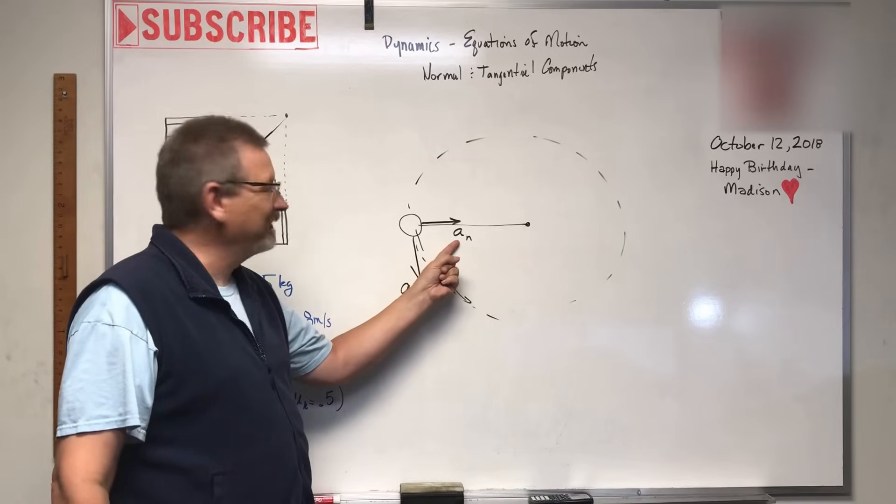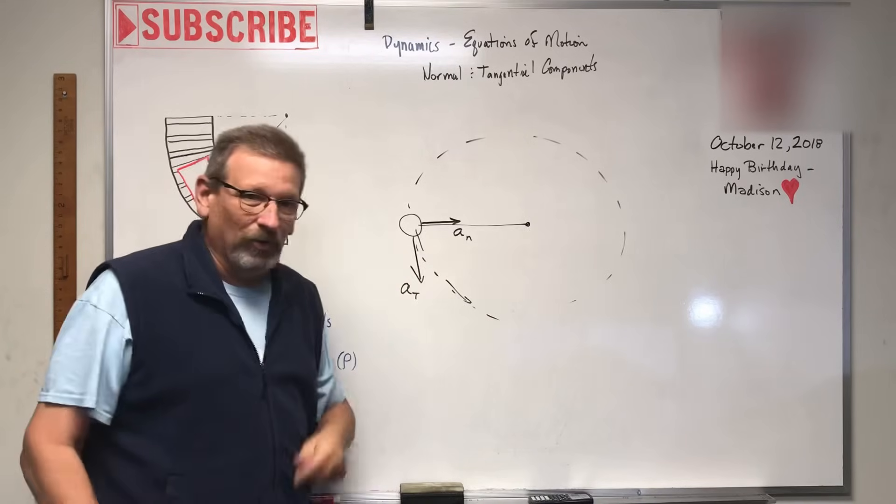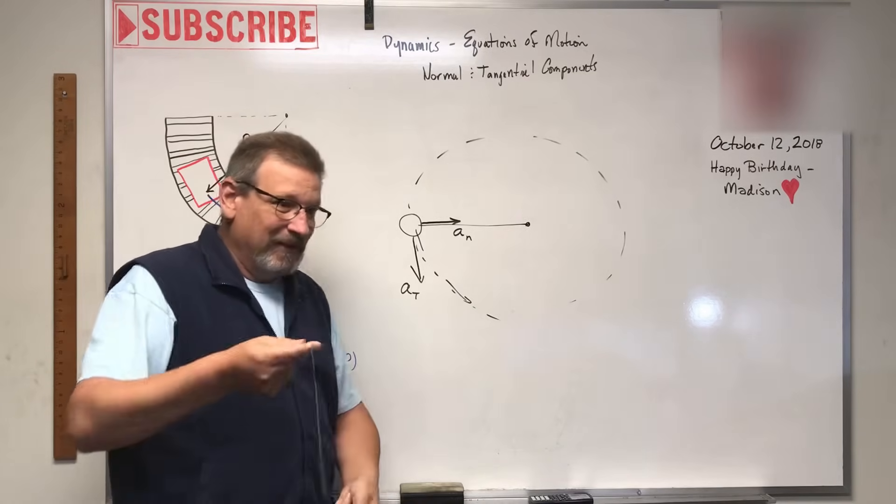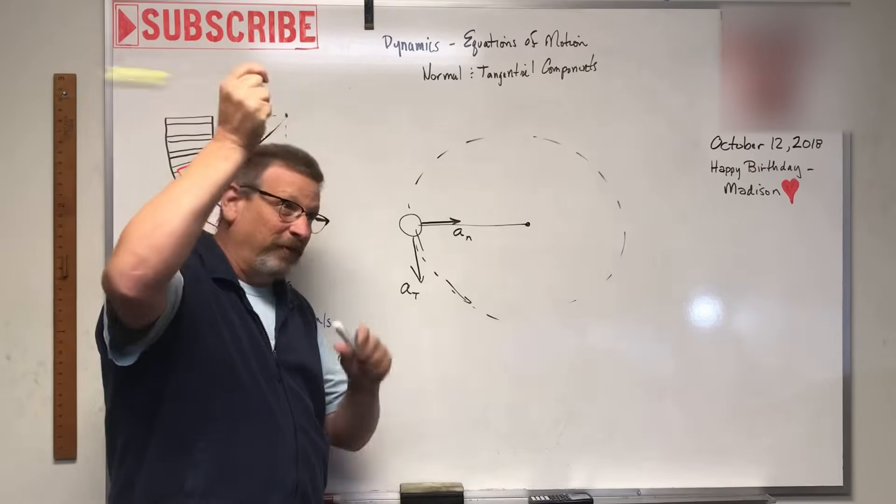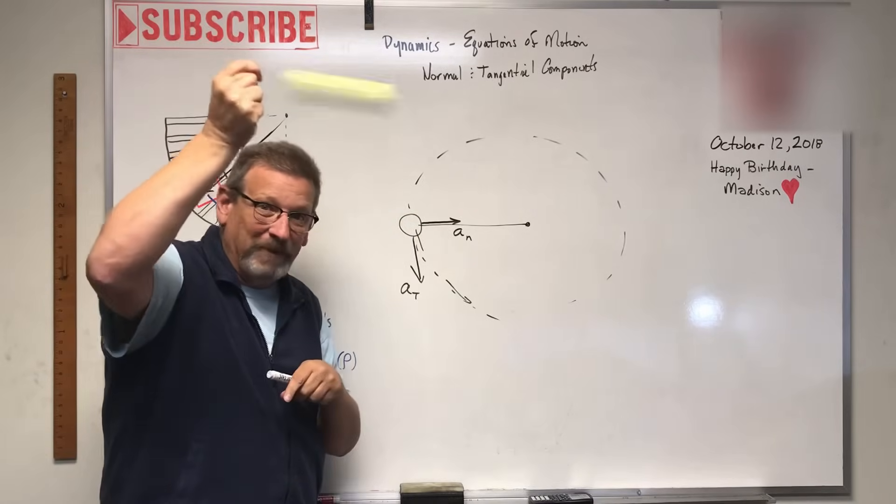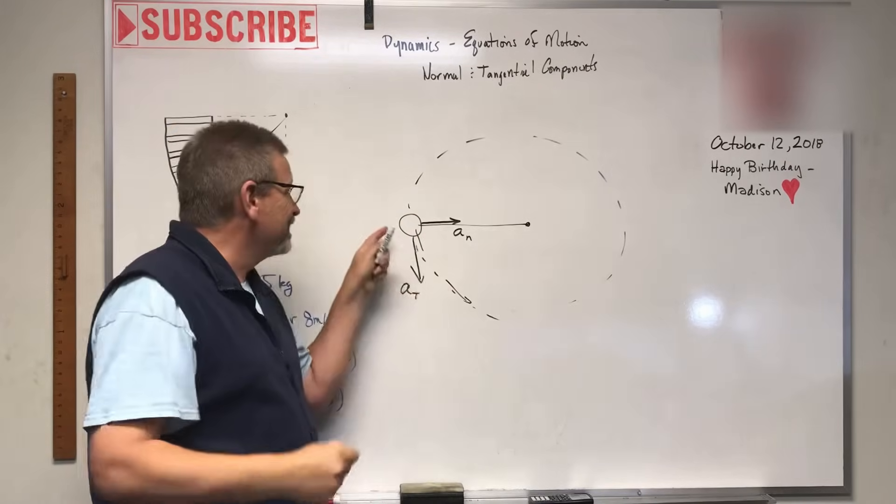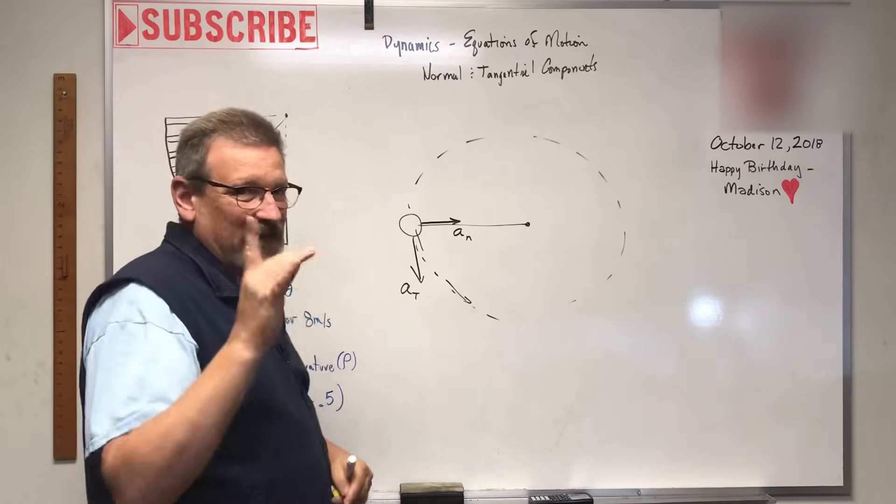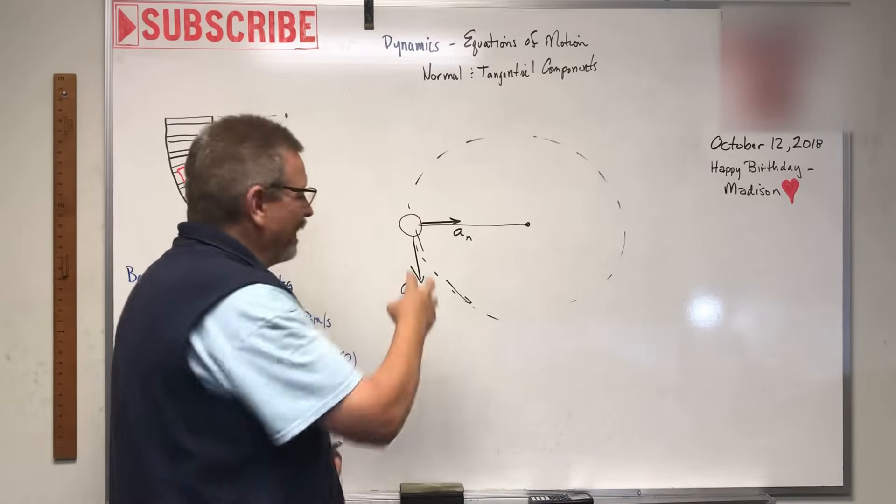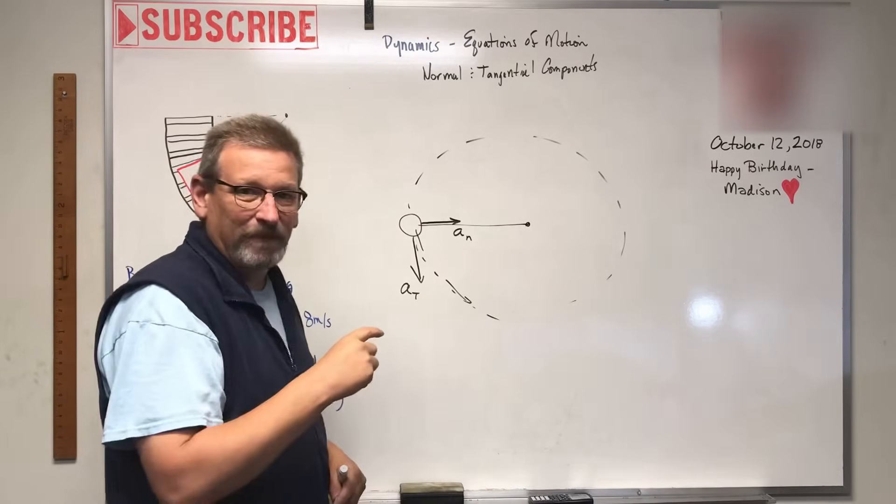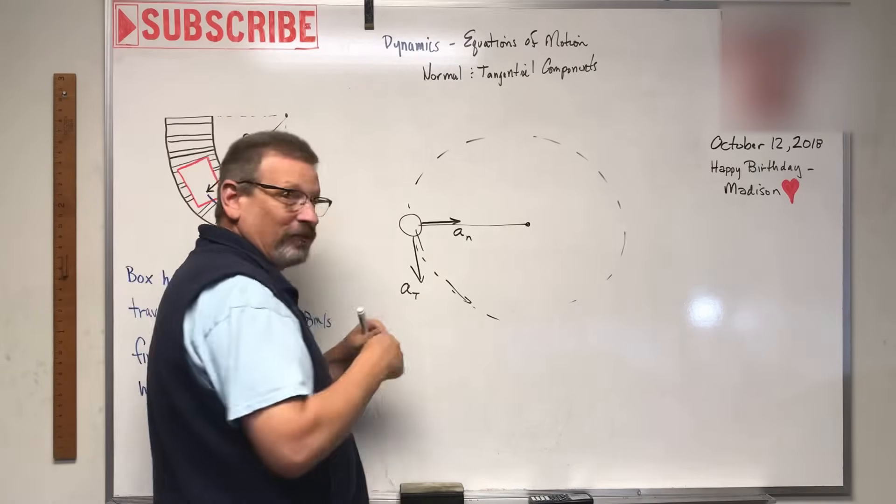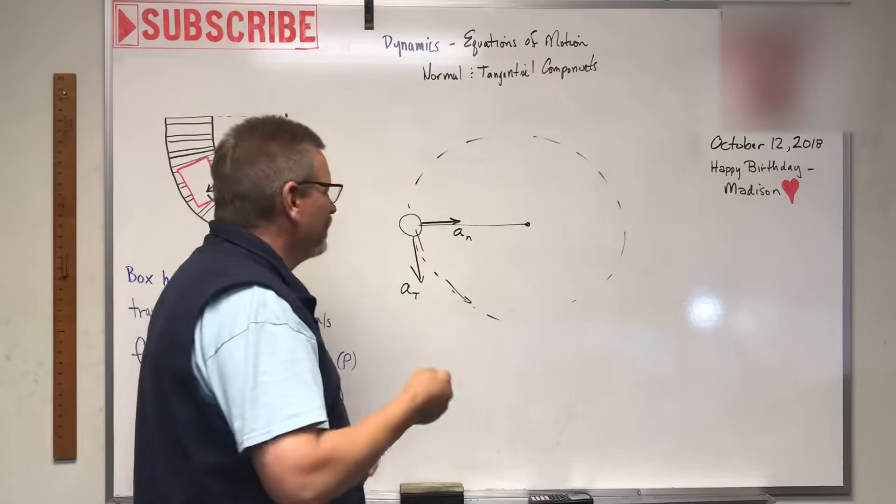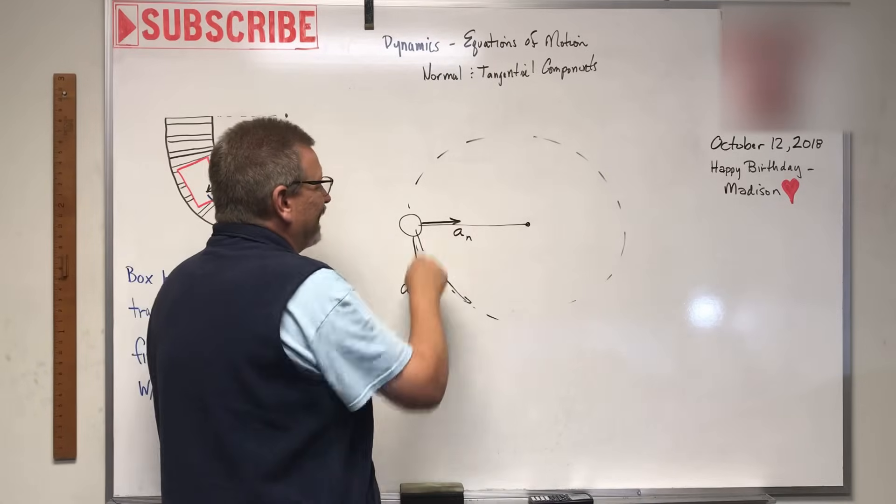You have this normal going towards the center. This really blows students' minds - wait a minute, if I'm twirling this around, I can feel it pulling away from me. Why is the acceleration going towards the middle? But think about the ball - it wants to fly off, right? But that force I can feel in the string as I'm swinging it, the thing that makes that string tight, is that acceleration.